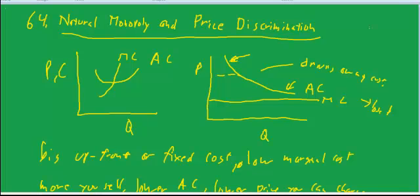What I drew on the left hand side is just an ordinary competitive firm with a U-shaped average cost curve and upward sloping marginal cost curve due to diminishing returns.